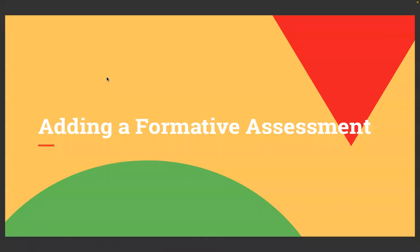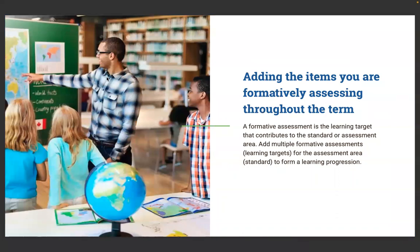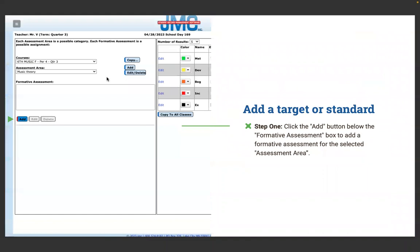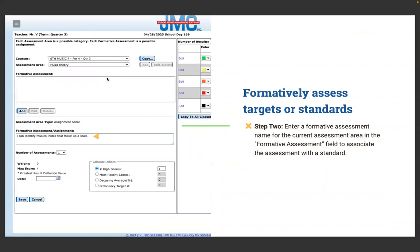A formative assessment is the learning target that contributes to the standard or assessment area. You can add multiple formative assessments or learning targets to form a learning progression. Step one: click the Add button below the Formative Assessment box. Step two: enter a formative assessment name — I list these as 'I can' statements. This is just what I am formatively assessing students on — whatever piece I'm assessing will go in here.